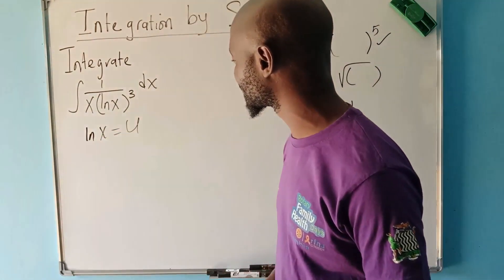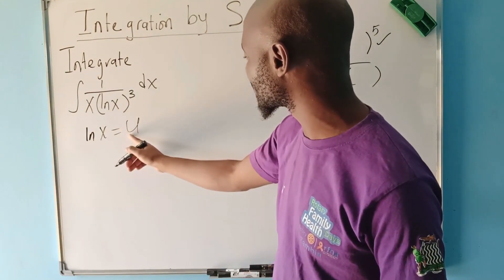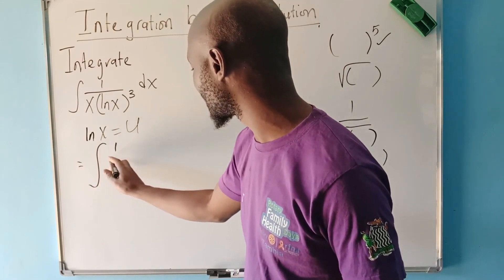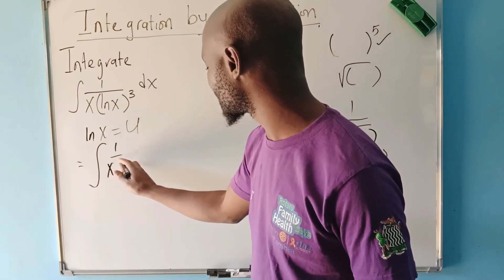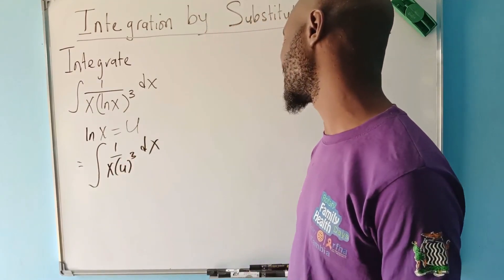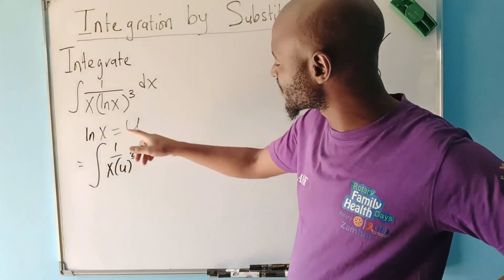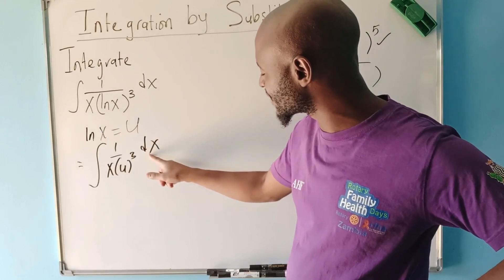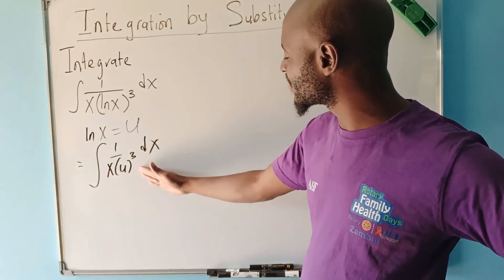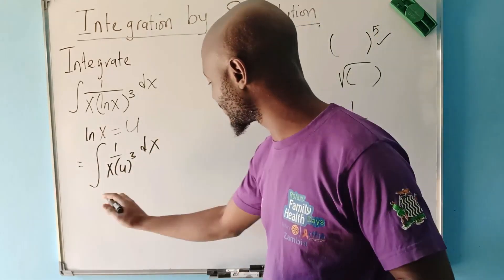You then use that u to manipulate and change the variable of integration from x to u. So we've said that ln(x) is the one we are going to make u. What this means is we can now change everything to u, so our integral becomes: the integral of one over x multiplied by u to the power three, integrating with respect to x.